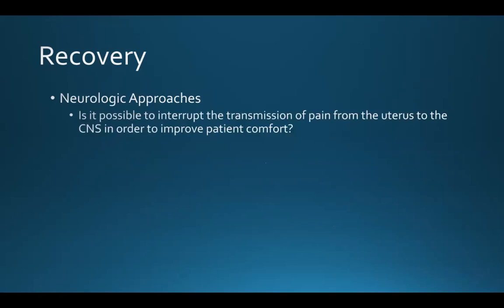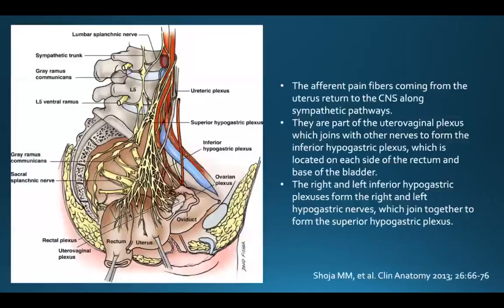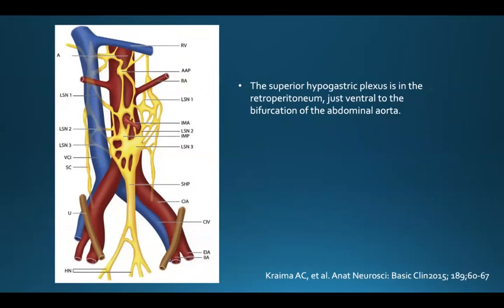In terms of neurologic approaches, it may be possible to interrupt the transmission of pain from the uterus to the CNS in order to improve patient comfort. The afferent pain fibers coming from the uterus return to the central nervous system along sympathetic pathways. They are part of the utero-vaginal plexus, which joins with other nerves to form the inferior hypogastric plexus, located on each side of the rectum and at the base of the bladder. These nerve plexuses eventually form the right and left hypogastric nerves, which join together to form the superior hypogastric plexus, in the retroperitoneum just ventral to the bifurcation of the abdominal aorta.